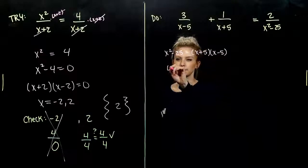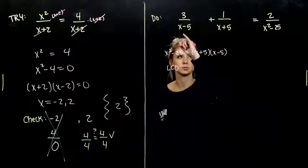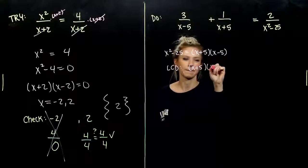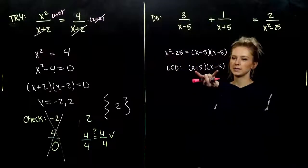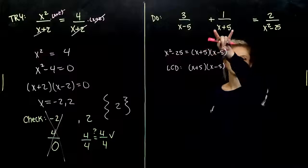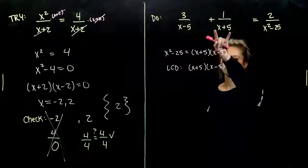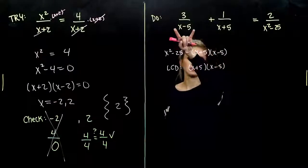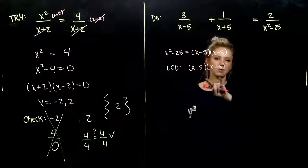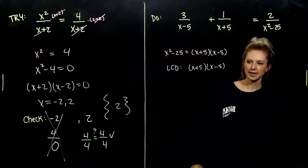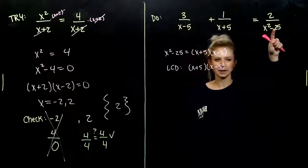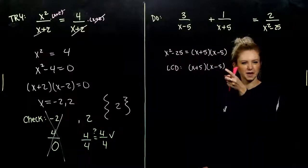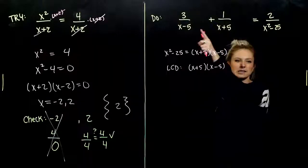So, as we build our LCD, I know it has to be divisible by each of them. So, I'm going to take my larger term to start with. And as we look, what is my LCD missing that this other term has? Nothing. We took that one into account. And what is my LCD missing that this one has? Nothing. I've already taken that one into account. So, my LCD is that entire factor on the bottom. X squared minus 25. But I'm going to write it out in this factored form, so I can easily see what's going to cancel.